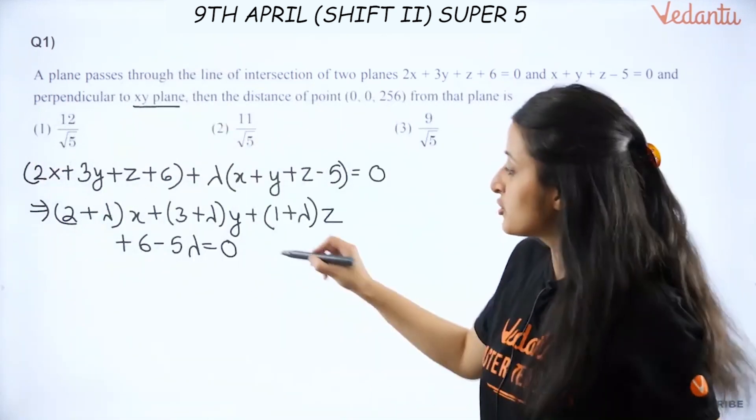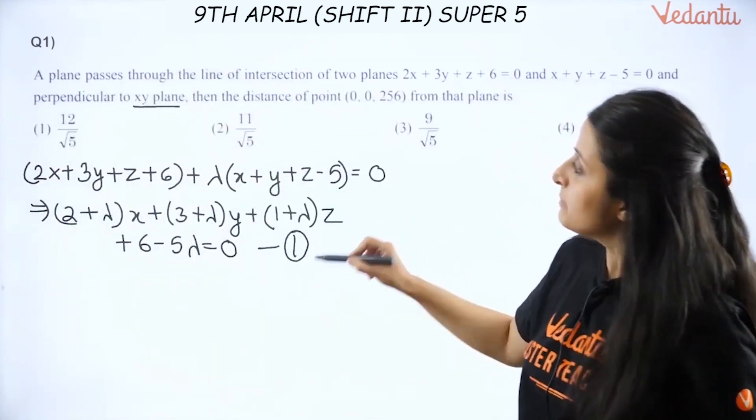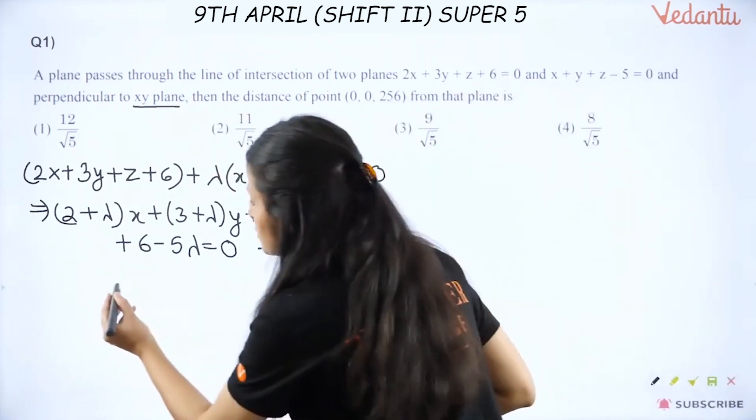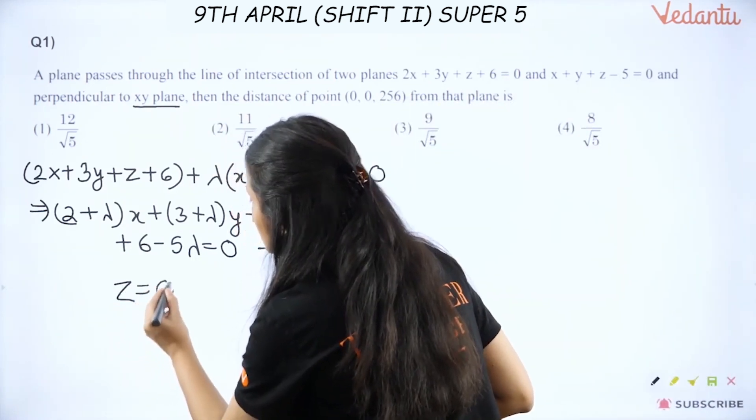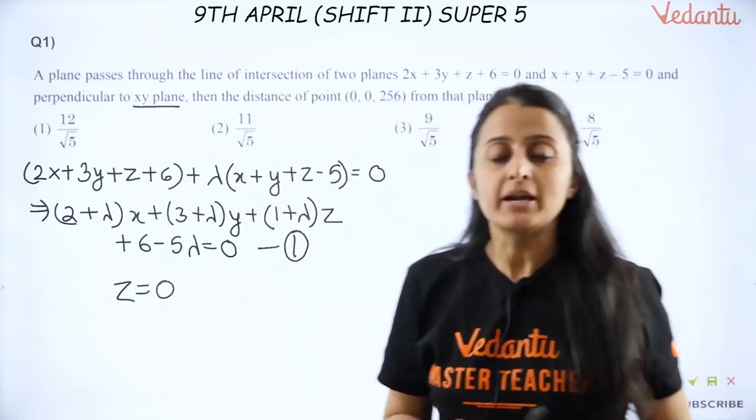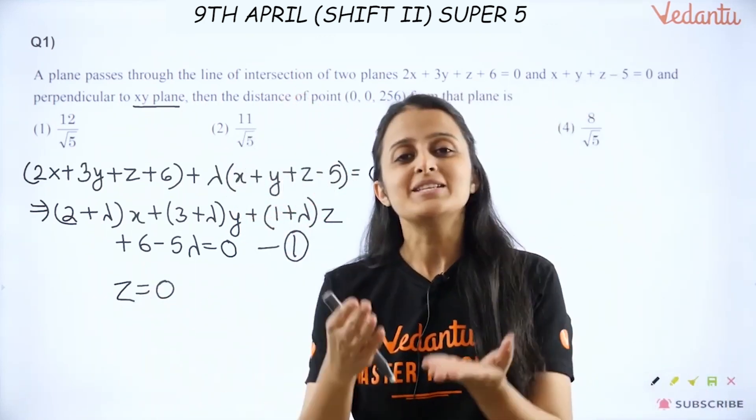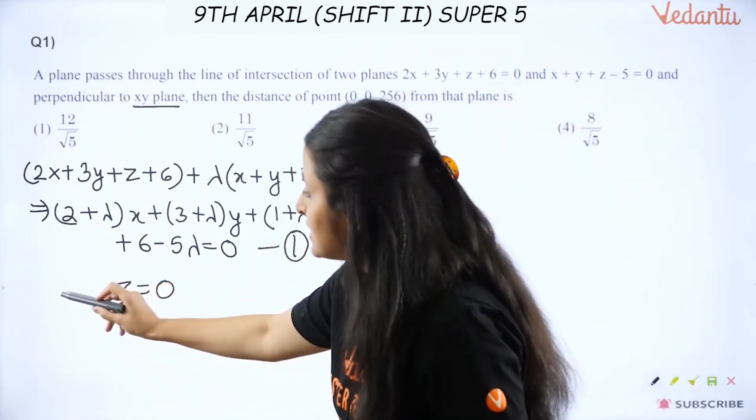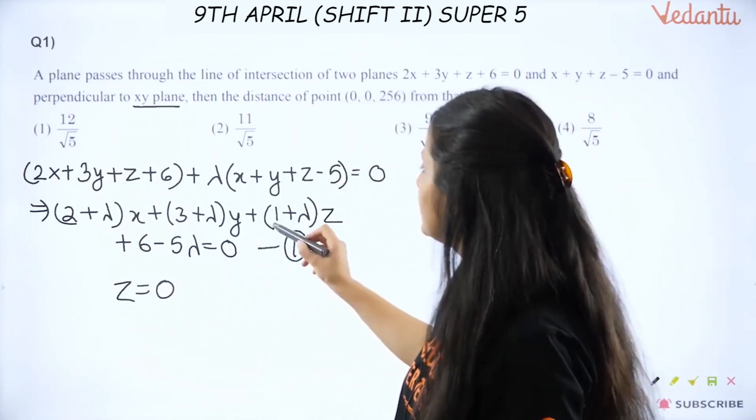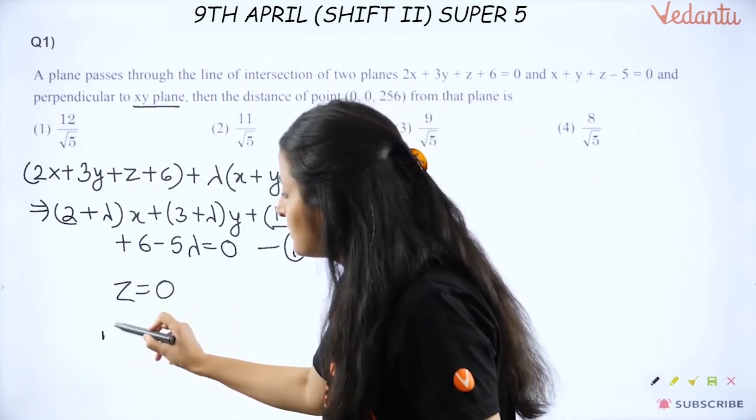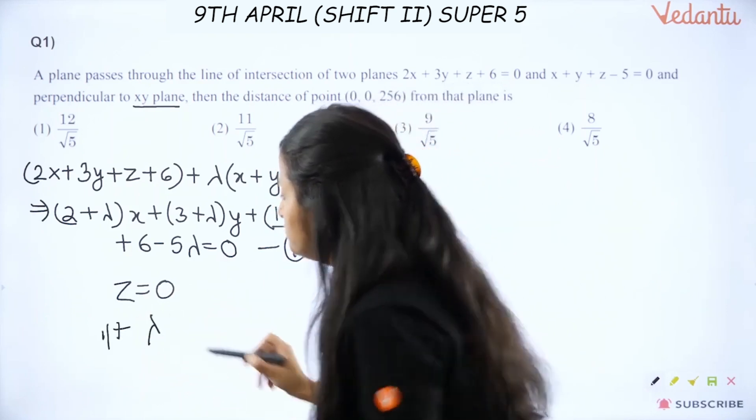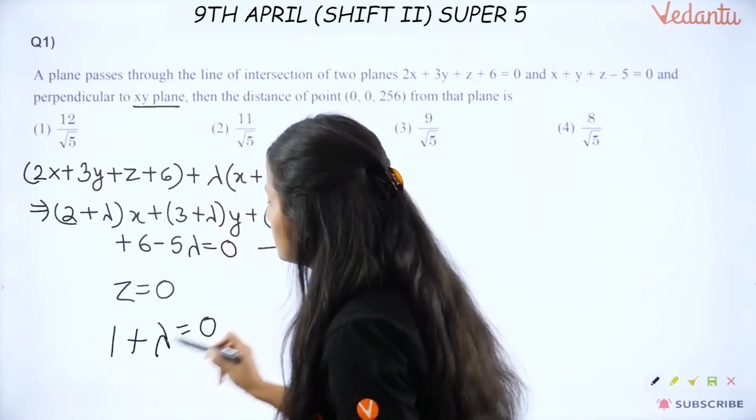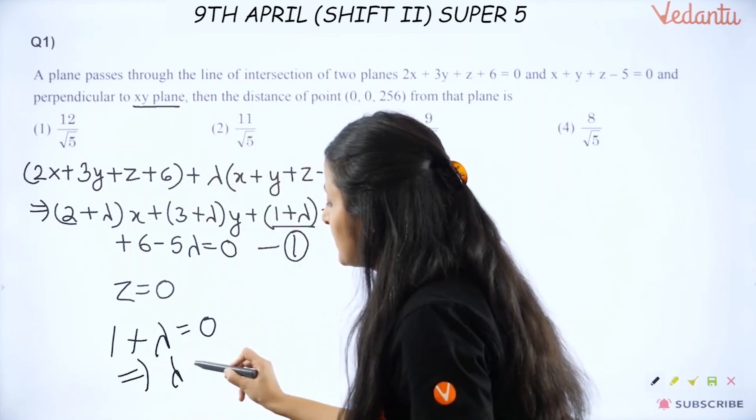So (2 + λ)x + (3 + λ)y + (1 + λ)z + 6 - 5λ = 0. This is your equation of the required plane. Now, this plane is perpendicular to the xy plane. The xy plane equation is z = 0. Now, two planes are perpendicular means dot product of their direction ratios is 0. So here, with z, I will say 1 + λ is equal to 0, meaning lambda is minus 1.